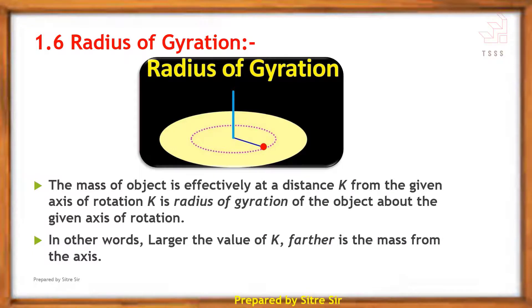In other words, larger the value of K, farther is the mass from the axis. The higher the radius of gyration's value, the farther the mass is distributed from the axis of rotation.